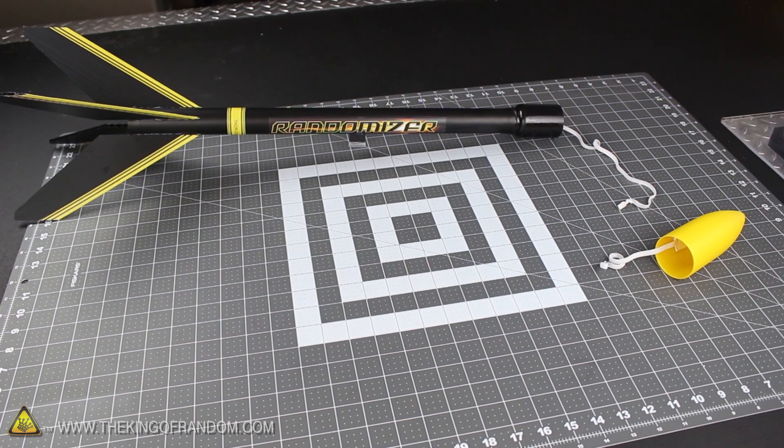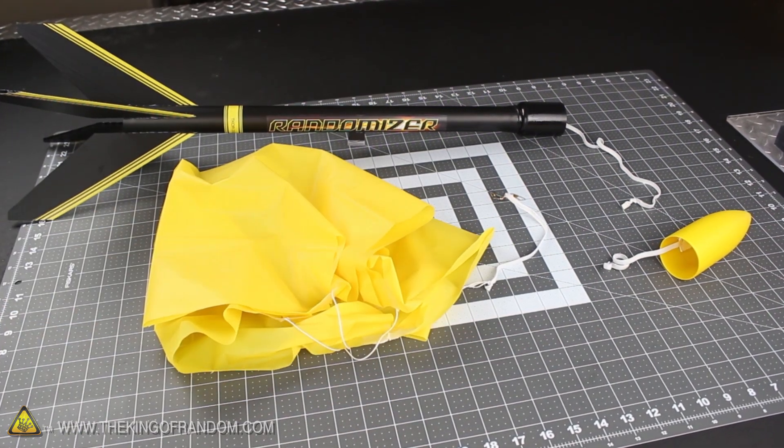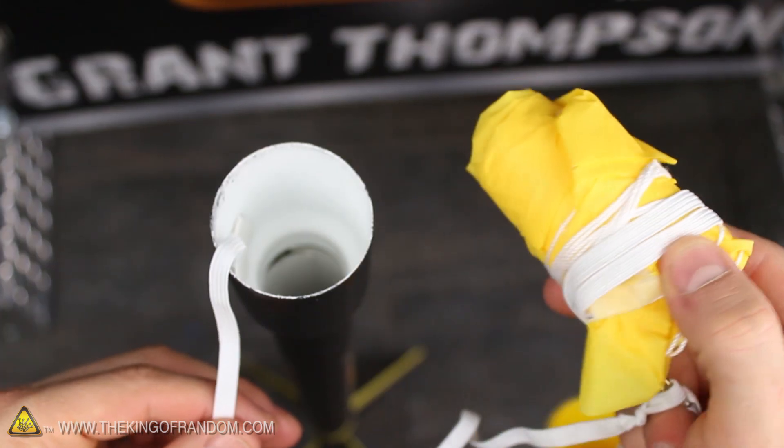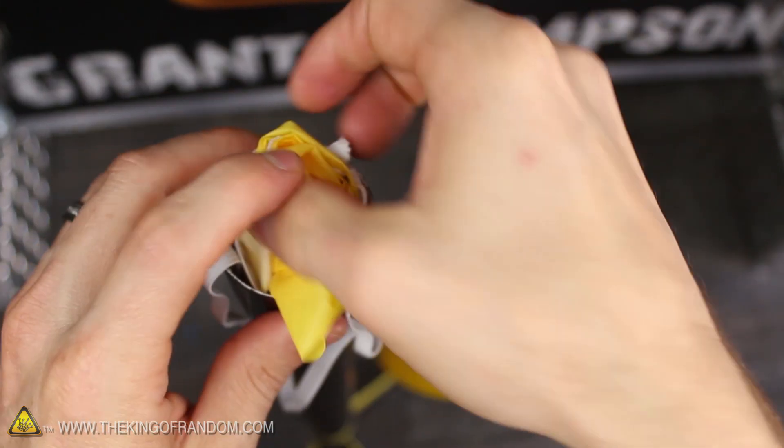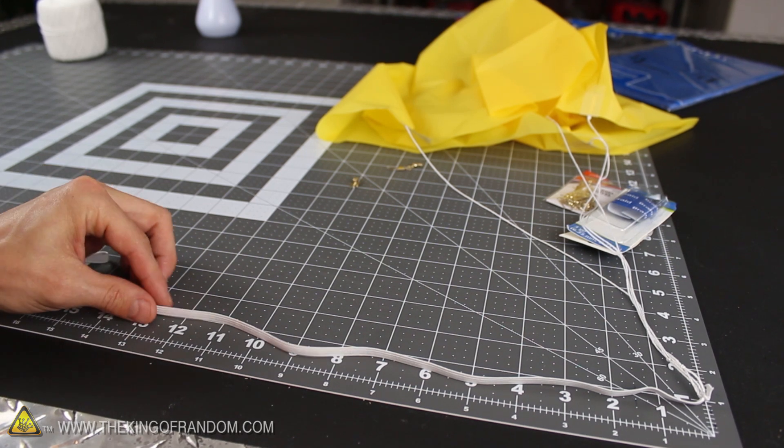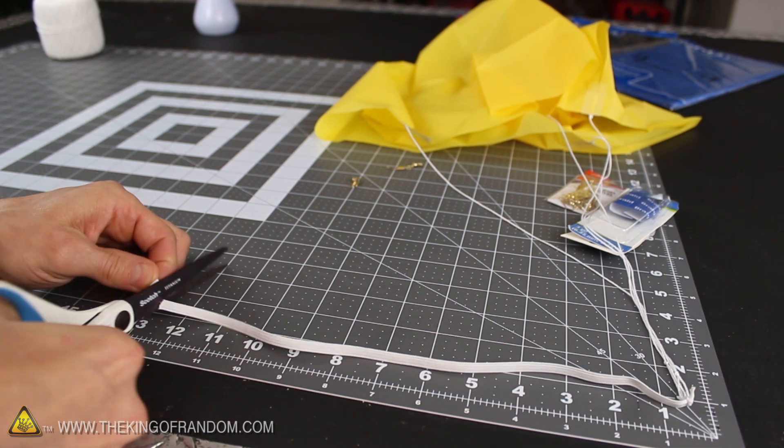Of course, my favorite way to use these simple chutes is with the homemade randomizer rocket we made in another video, and it only takes a couple of simple modifications to work with these rockets. First, make sure your elastic cording is tied securely to your parachute, then cut it off around 13 inches long.